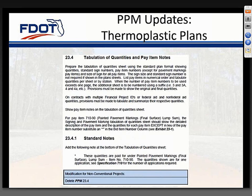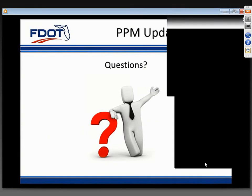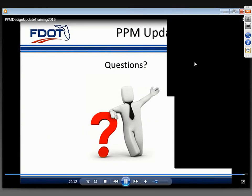Finally, in Chapter 23 of Volume 2, we removed the language related to separate thermoplastic contracts. Thermoplastic pavement markings will now be included in construction contracts. This revision impacted Section 23.1 and completely removed the old Section 23.10. That concludes this presentation on Volumes 1 and 2, with the exception of Chapters 4 and 7, which we'll cover in a few minutes. For now, we'll take a few questions.